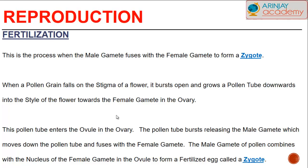Fertilization is the process when the male gamete fuses with the female gamete to form a zygote. When a pollen grain falls on the stigma of a flower, it bursts open and grows a pollen tube downwards into the style of the flower towards the female gamete in the ovary.